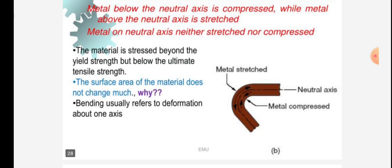Because bending usually refers to deformation about the one axis, metal is stretched and metal is compressed.